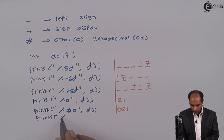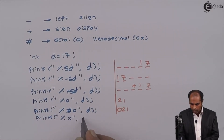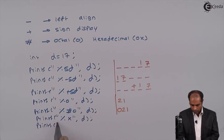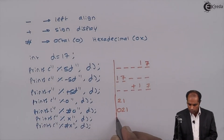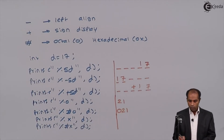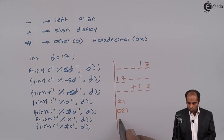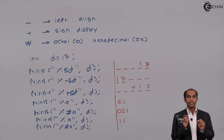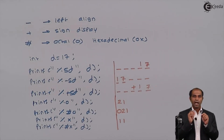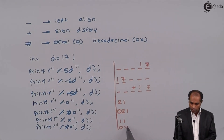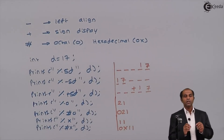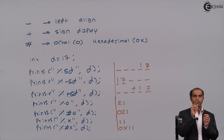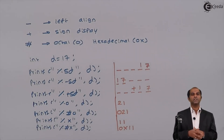If I use printf("%x", d), it displays the hexadecimal equivalent of 17, which is 11. When I use printf("%#x", d), it adds 0x in front, displaying 0x11 on the screen. So basically the hash flag is used to display octal numbers with a leading zero and hexadecimal values with the prefix 0x.